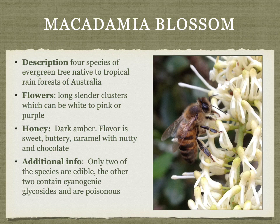Macadamia blossom honey comes from trees native to Australia, now planted widely and harvested in Hawaii. The honey is dark amber, sweet, buttery, caramel, nutty, and chocolatey.